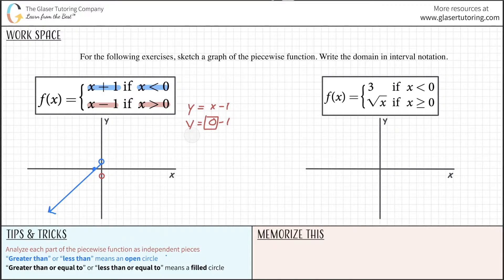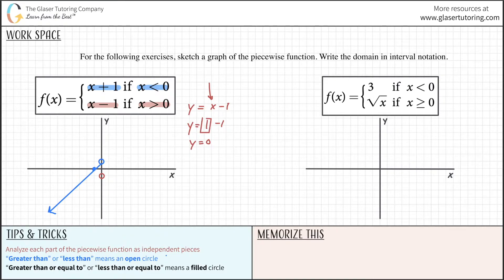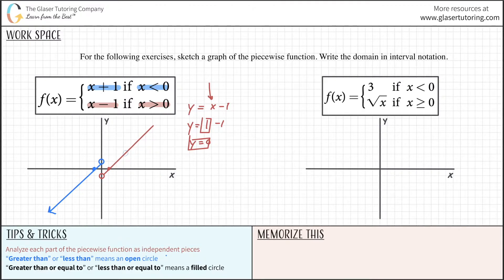Now choose another point — any point greater than 0. I'll choose x equals 1. So y equals 1 minus 1, which gives y equals 0. When x is 1, y equals 0. That's a point here on the graph. Since it's a linear line, I'll draw it right out. That takes care of that part. So this is the complete graph of the piecewise function.